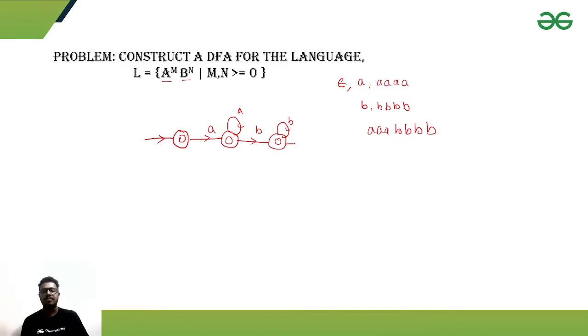But after b, if it is getting another a, that would not be accepted because that will violate our condition. So, that will lead to a dead state. This will be the corresponding DFA for the given problem.